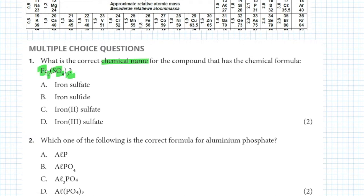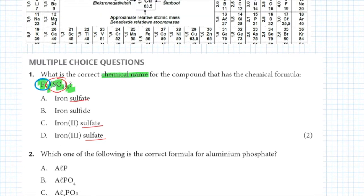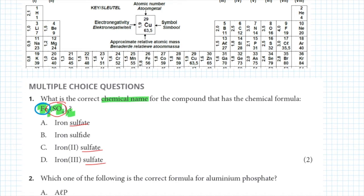We know that SO₄ is sulfate, so either option A, C, or D is correct. Iron (Fe) is a transition metal found on the periodic table. When naming ionic compounds with transition metals, we need to include the charge of the transition element in the name.